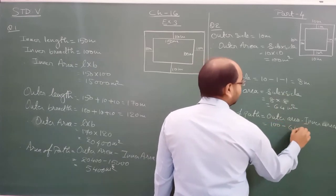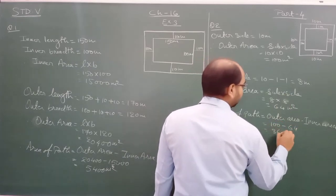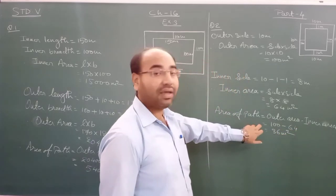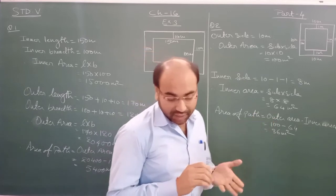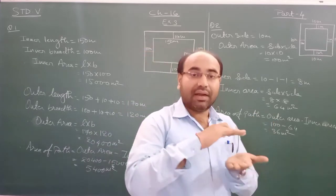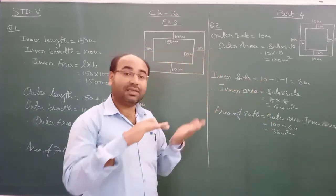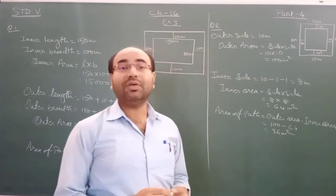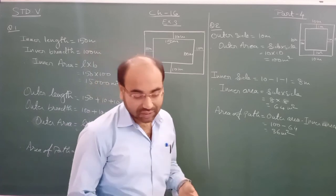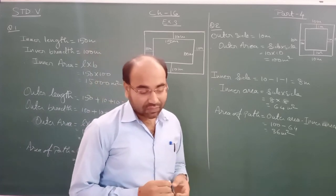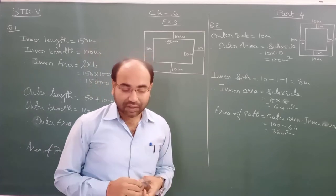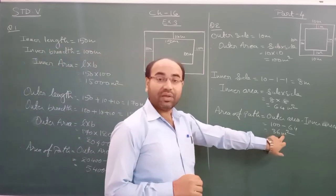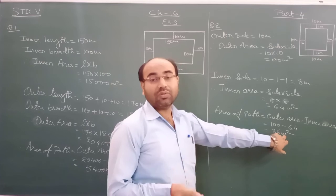Area of path equals outer minus inner — so 100 minus 64 equals 36 meter square. Now we need to find the cost of leveling the path. The area of the path is 36 meter square, and the rate given in the question is rupees 2.50 per square meter.